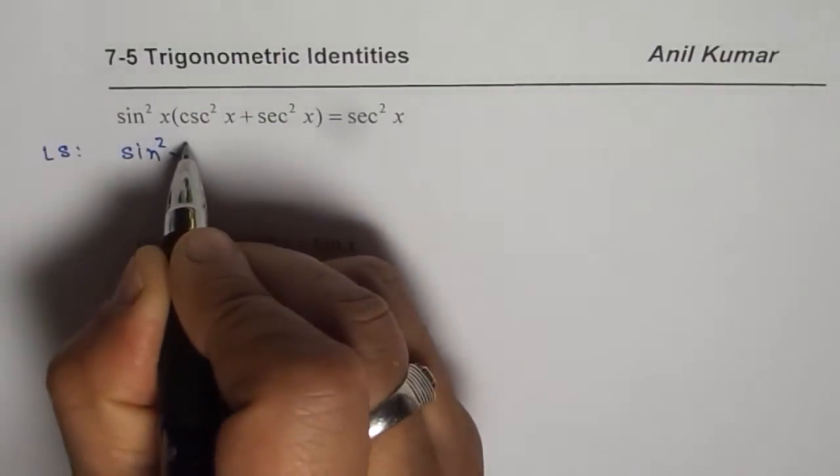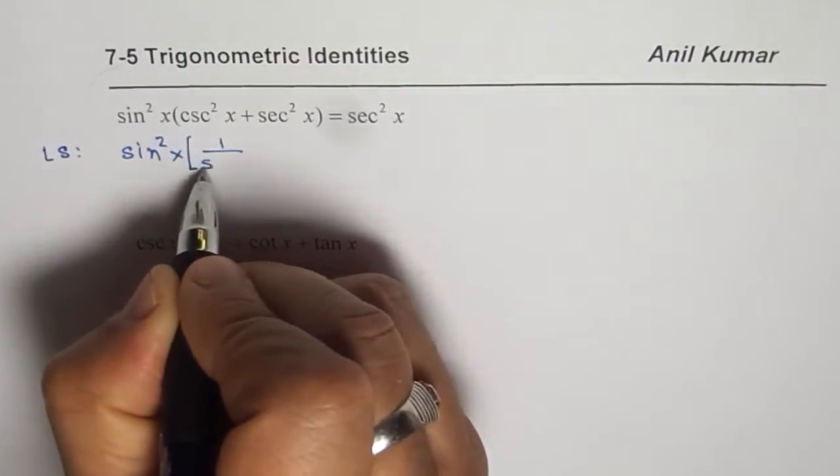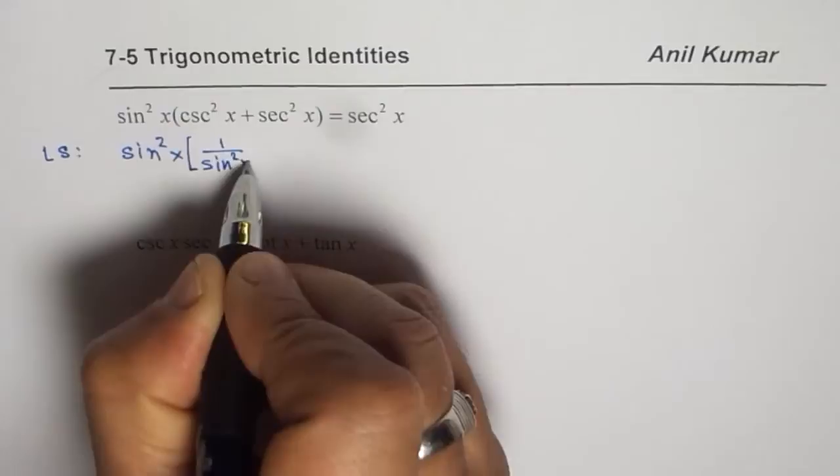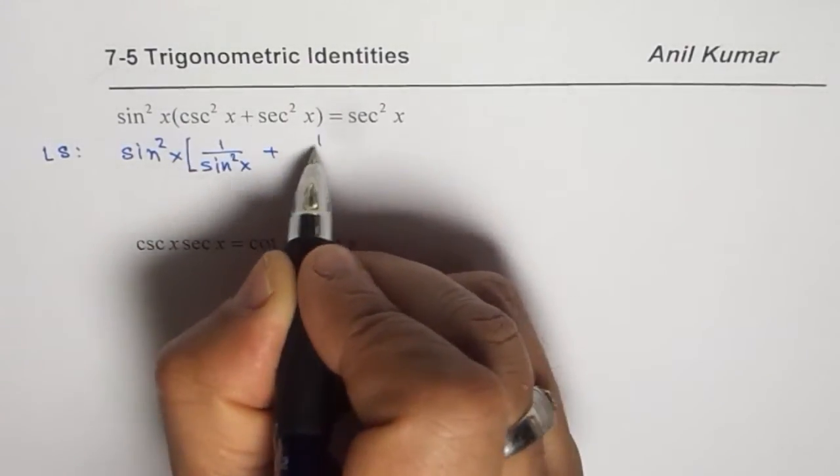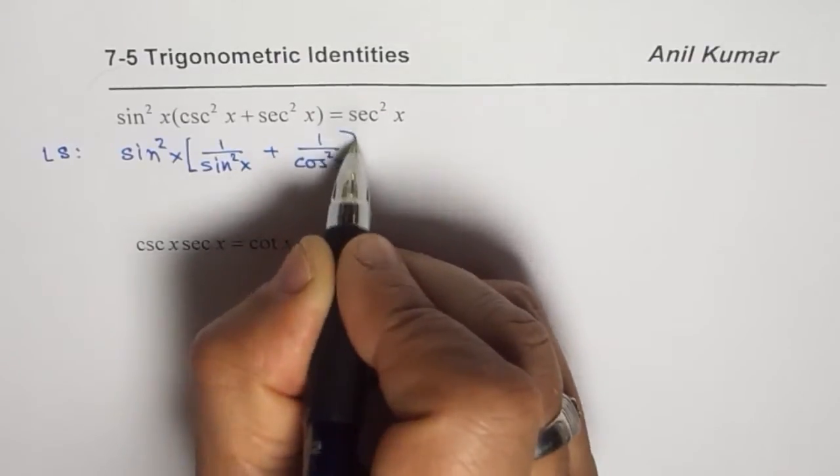We get sin²x and within brackets, cosecant is 1 over sine, so we can write this as 1 over sin²x, and secant is 1 over cos, so we can write this as 1 over cos²x.